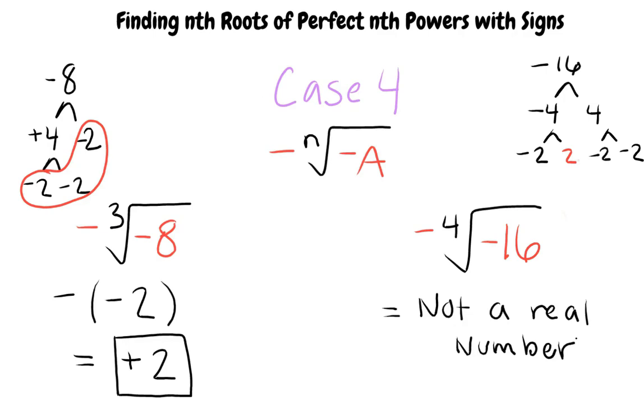So if n is odd, like the last example, the cubed root of negative 8 yields a negative 2. But now with the negative leading the radical, the two negatives cancel each other out, giving positive 2 as the answer.